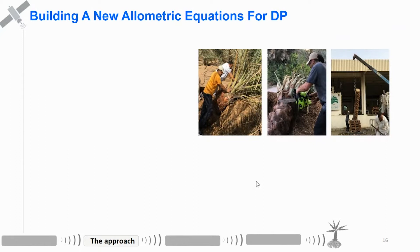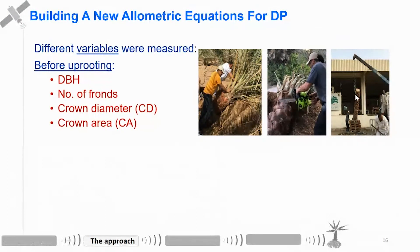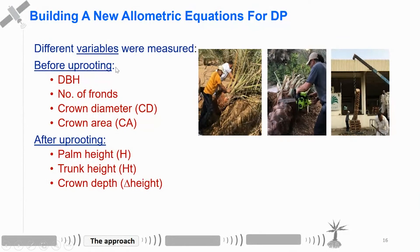After we selected the plants, we uprooted them and partitioned them into four parts: crown, trunk, and root system, and weighed them as well. We also took measurements from the date palm itself — the diameter at breast height, number of fronds, crown diameter, crown area, palm height, trunk height, and crown height.